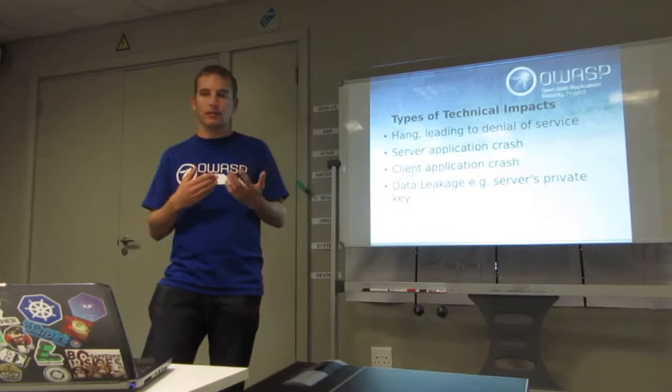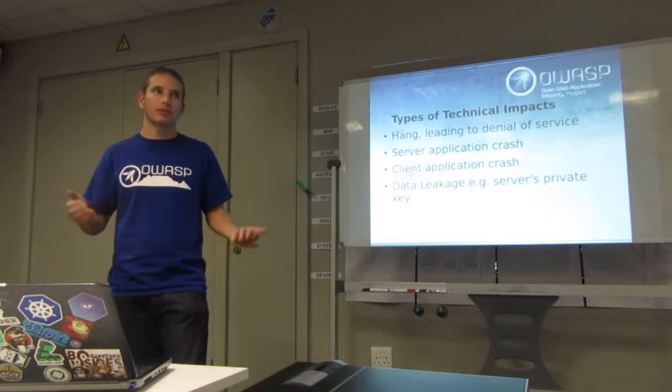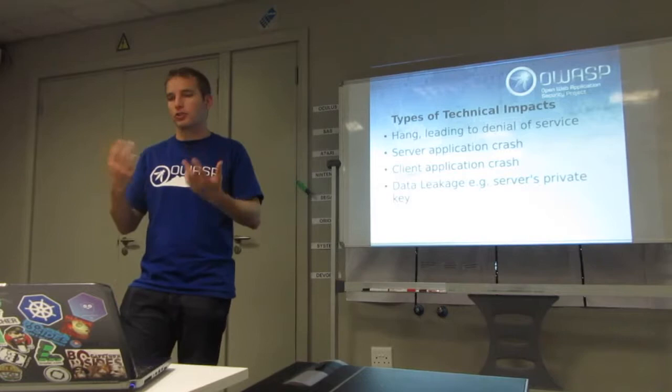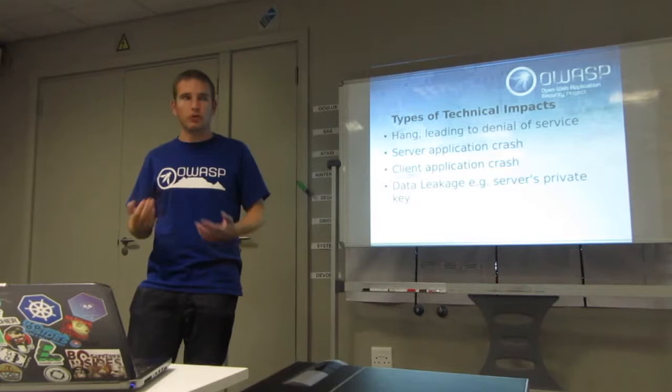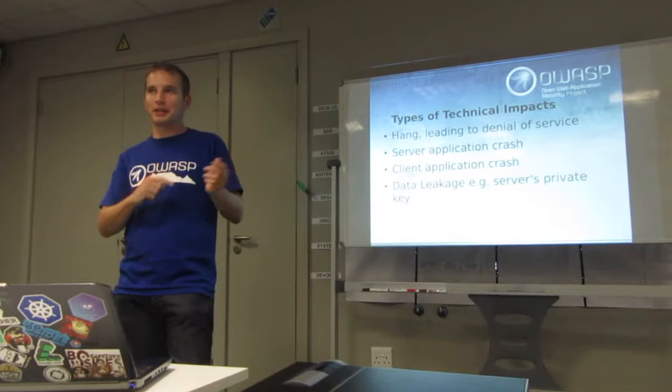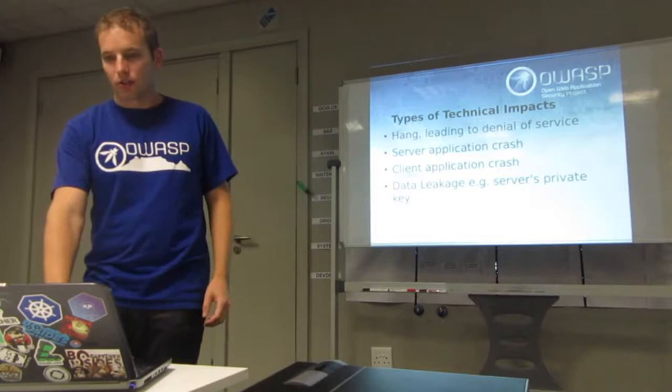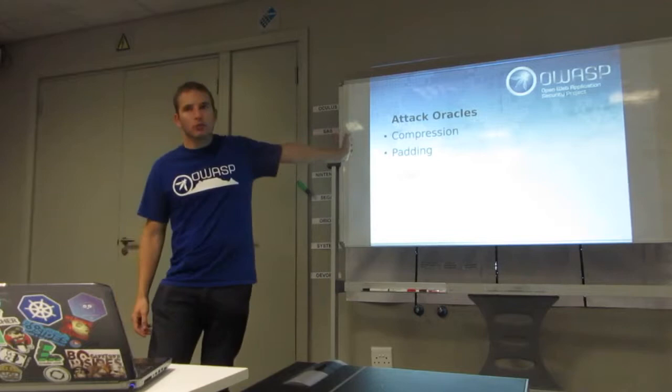So of these vulnerabilities, we get different types of effects, impacts. You can have just a hang - if you can cause machines to hang en masse, denial of service. Not so great in terms of breaking encryption or gathering secret data, but it's still a way to hurt somebody. If you can crash the application server, that can be useful, especially if the application server's got privileges. You've got the client application crash - maybe you can hijack somebody's machine that way. And data leakage. I mentioned a real-world example of the server's private keys being leaked, which is a very bad thing because the private keys are used for the CSR, for the cert, so it's all broken, and you can use that to decrypt the traffic.